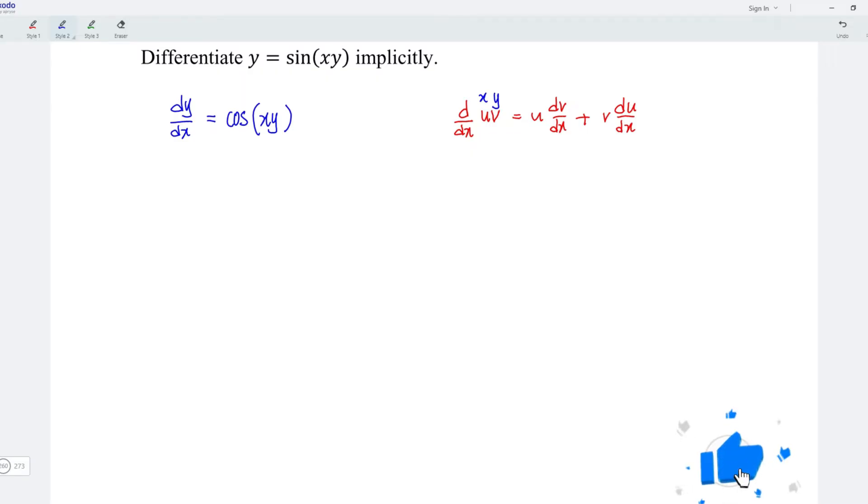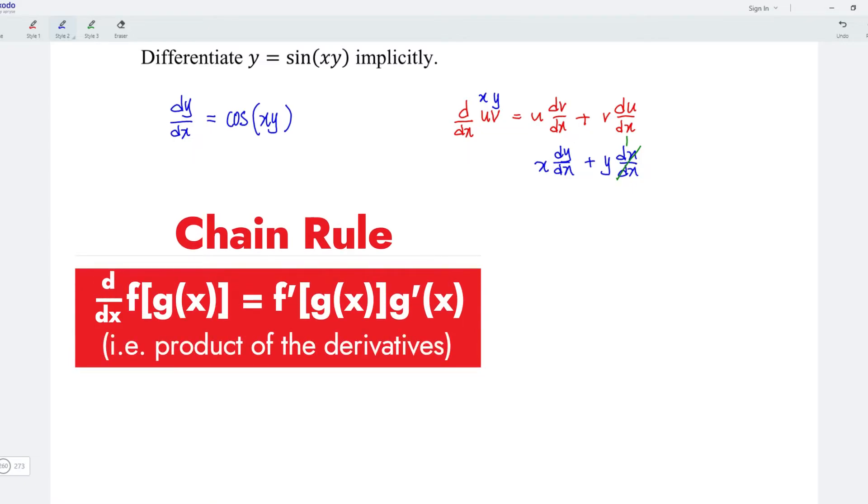Which means that we should obtain x dy dx plus y dx dx, or simply equal to 1. By using the chain rule, we should multiply the derivative of xy. So let's write it here.